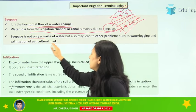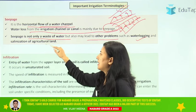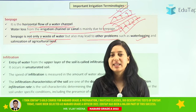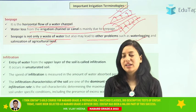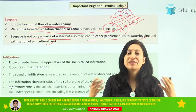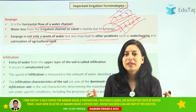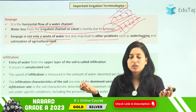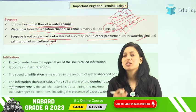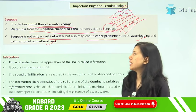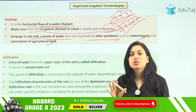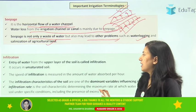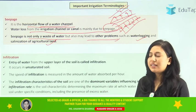Seepage is a water loss due to horizontal movement of water from the water canal. Seepage is not only a waste of water but may also lead to other problems such as waterlogging and salination of agricultural land. Due to continuous seepage from a water canal, waterlogging can occur around the area, and due to waterlogging, salts can come to the surface of the soil, causing salination problems.